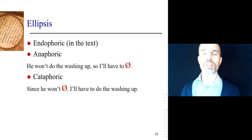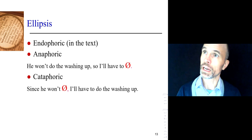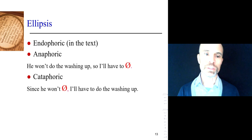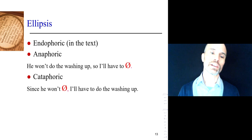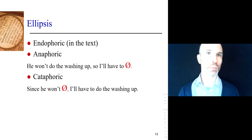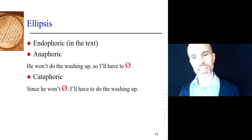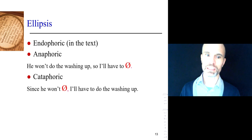It can also be cataphoric. Cataphora is less common and is often used for some effect — to catch someone's attention. For example: 'Since he won't, I'll have to do the washing up.' 'Won't what?' — we know 'won't' is not enough. 'He will not' — will is a modal verb, but modal verbs need main lexical verbs — so 'since he won't' is incomplete. The ellipsis points forward: 'do the washing up' appears later in the sentence, and only at that point is the presupposition satisfied. You can then interpret it as: 'since he won't do the washing up, I'll have to do the washing up.'